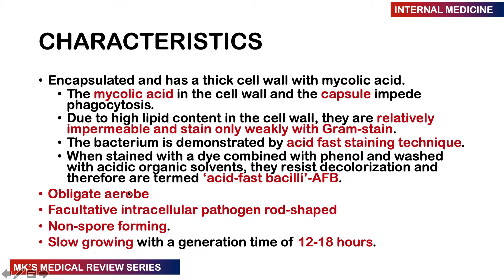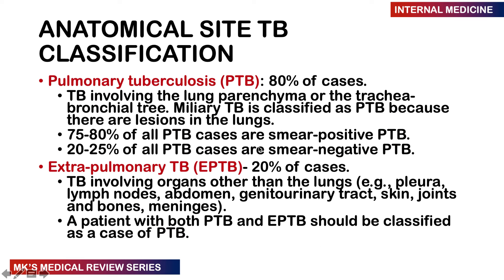Mycobacterium is an obligate aerobe — it loves air — so you find it in the apices of the lungs where oxygen tension is highest. It is a facultative intracellular pathogen that is rod-shaped, doesn't form spores, and grows very slowly. When you do a culture it will take a very long time to grow, with a generational time of about 12 to 18 hours.